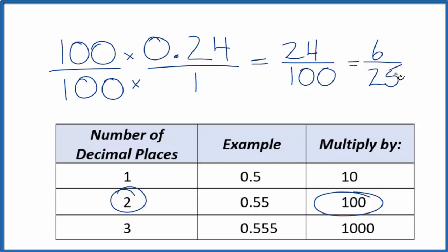If you divide 6 by 25, you'll get 0.24. So the decimal 0.24, that's the same as the fraction 6 25ths.